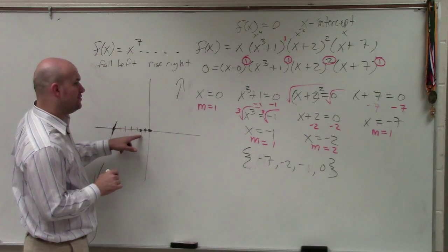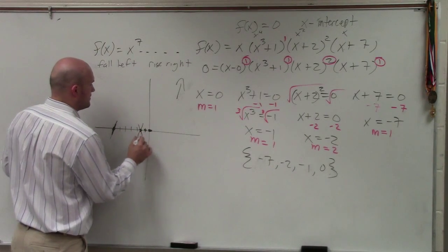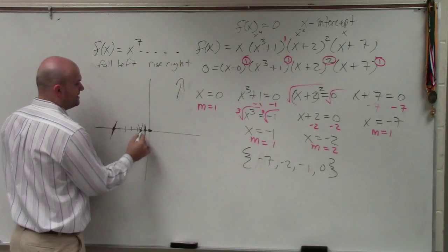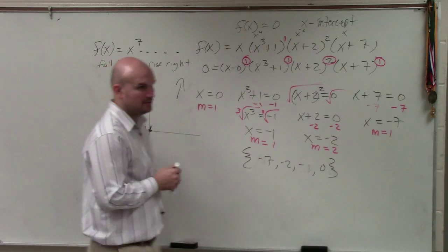Negative 2 is even, so that means the graph bounces. Negative 1 is odd, and 0 is odd. Right?